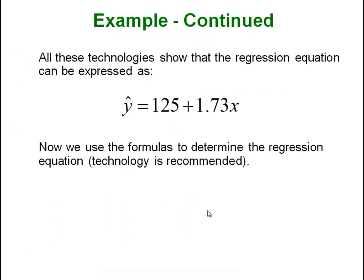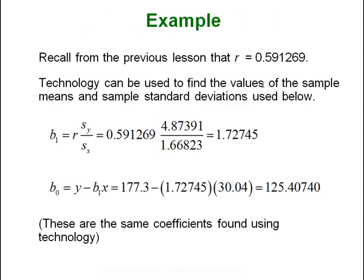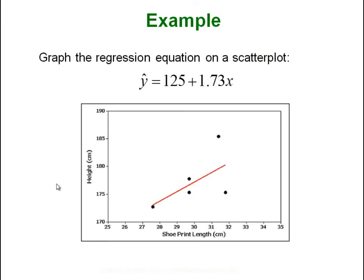Here is the regression equation we got from the technology. This tells us that if we have a shoe length of zero — x equals zero — our person should still be 125 centimeters tall, which is a bit silly. From our previous lesson our r was 0.59. Plugging things in by hand we get our slope (b-one) and our intercept (b-zero), the same values we got using technology. When we graph it, note that the origin starts at 170 and the axes start at 25 and 170 — it has been zoomed in.